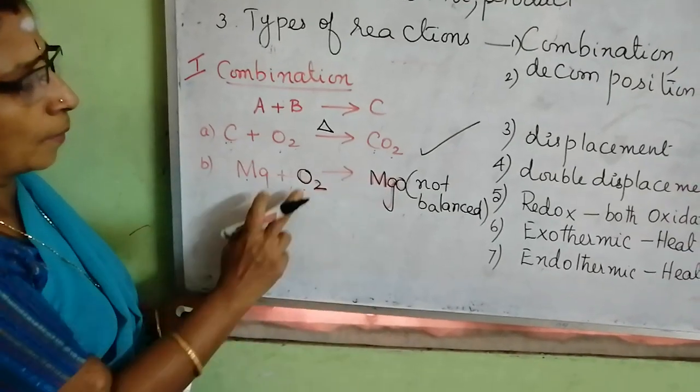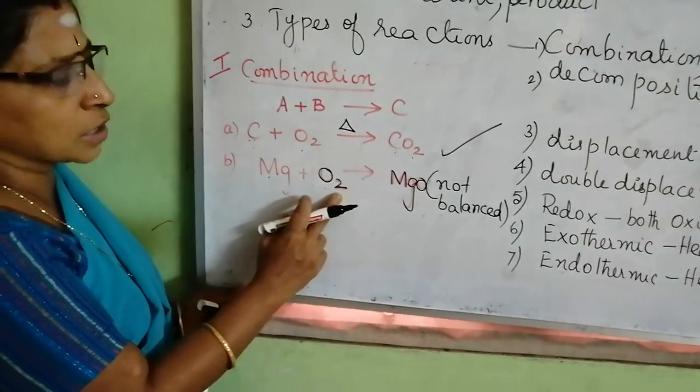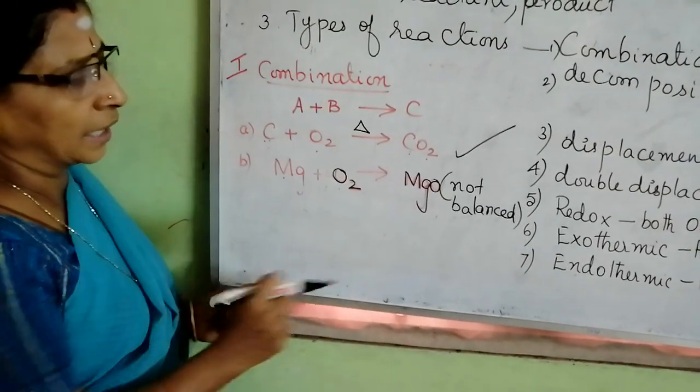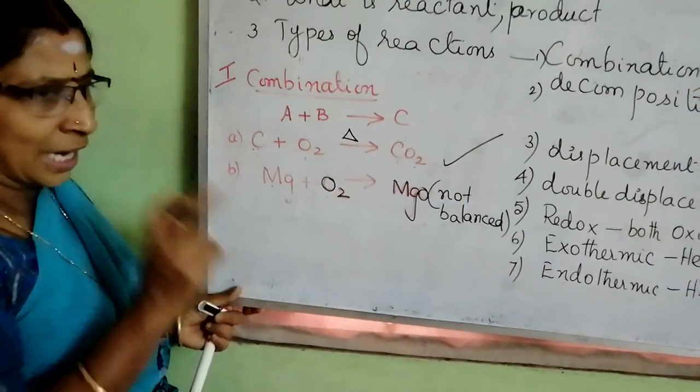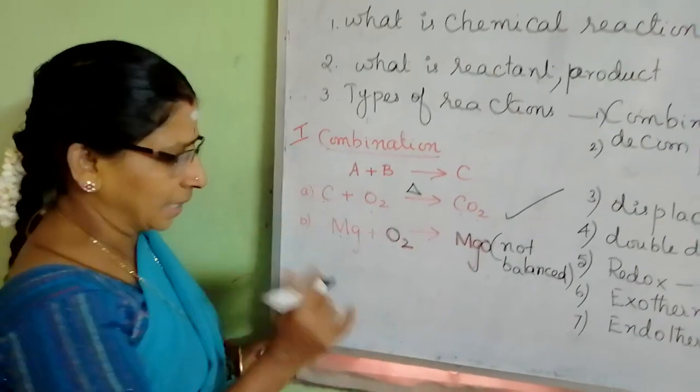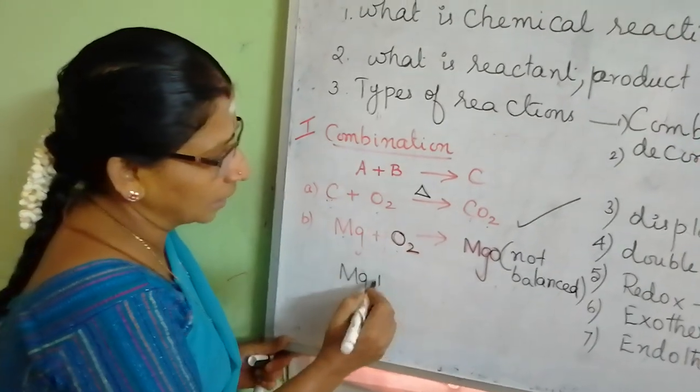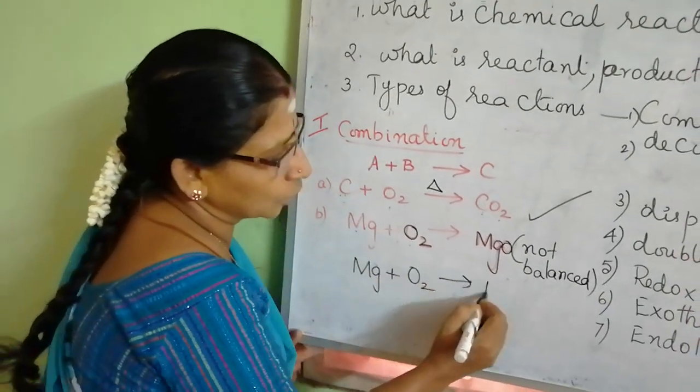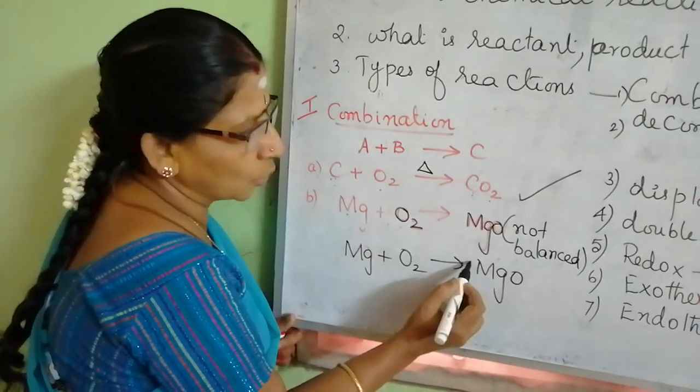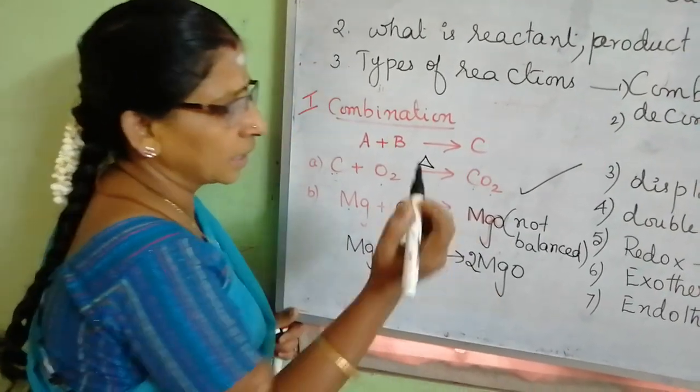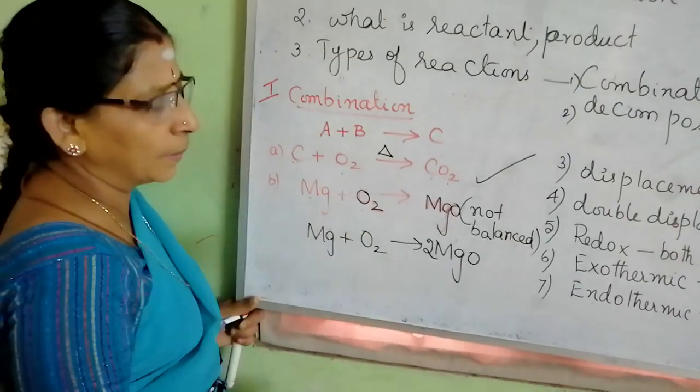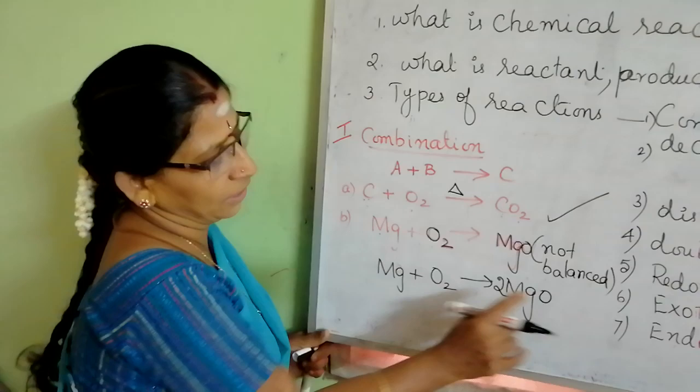Now, you see whether it is balanced or not. One Mg, one Mg, no problem. But how many oxygen? Two oxygen atoms. One molecule or two oxygen atoms. I have written only one atom. So, it is not balanced. I told you, every chemical equation must be balanced. So, in order to balance the equation, I am writing MgO. I have to make two oxygen atoms here. In order to put that, I am writing 2 in the front. We should not put it here. If you put it here, its formula will be damaged.